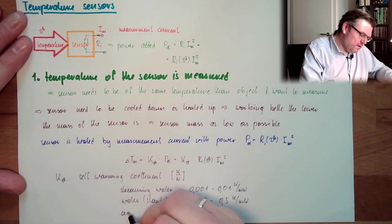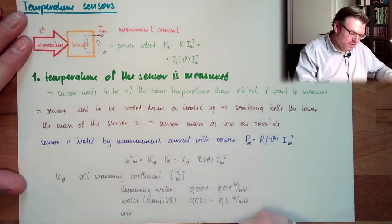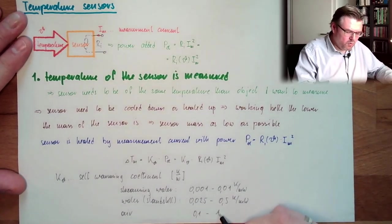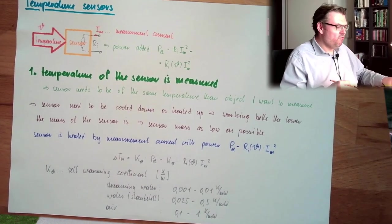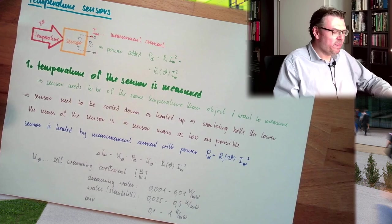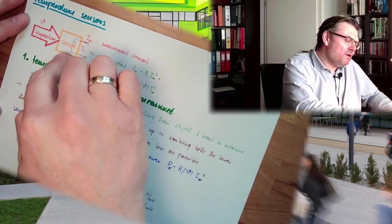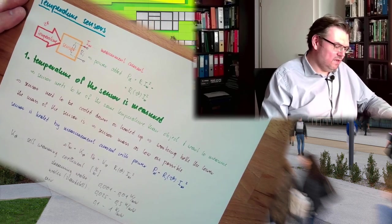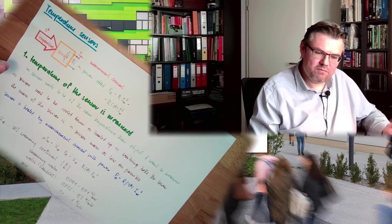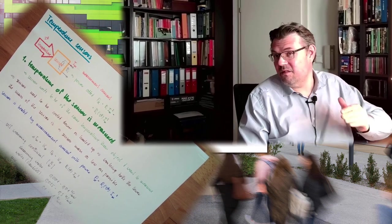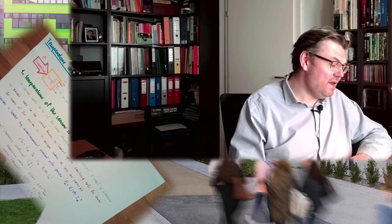If it's air, then you are at 0.1 up to 1 Kelvin by milliwatt. This would be then in those mentioned very tiny chambers, okay? So these things you have to consider regardless of the working principle of the sensor. You have self-warming and you have to get the sensor to the measured temperature. You have the mass of the sensor and you have the self-warming of the sensor. Those two things will influence your measurement in any case.